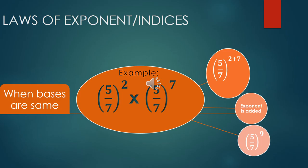When the bases are same, the powers, exponent or indices will be added. And we get the answer 5 upon 7 to the power 2 plus 7, which is equal to 5 upon 7 to the power 9.